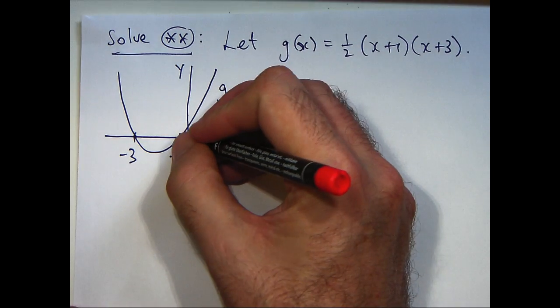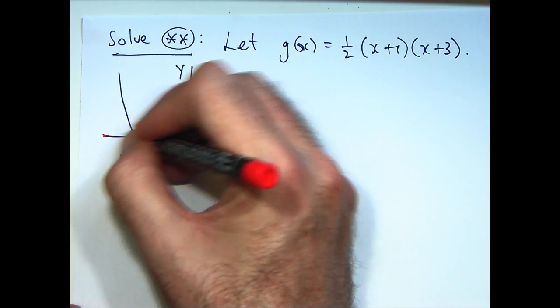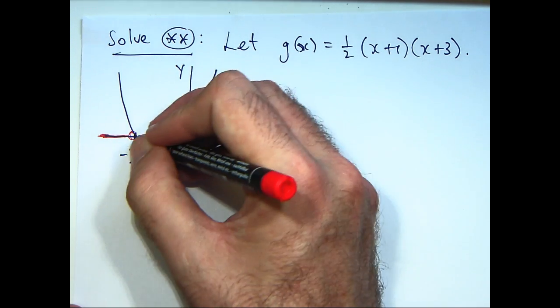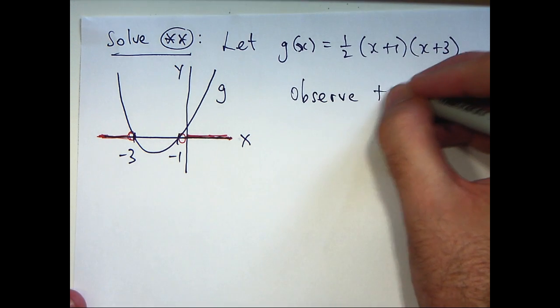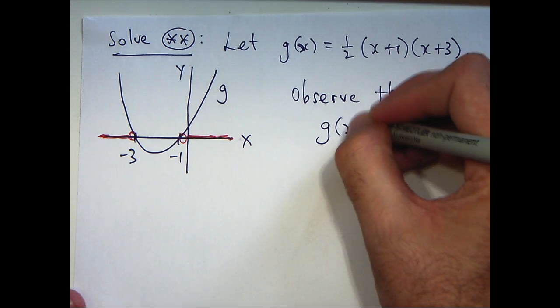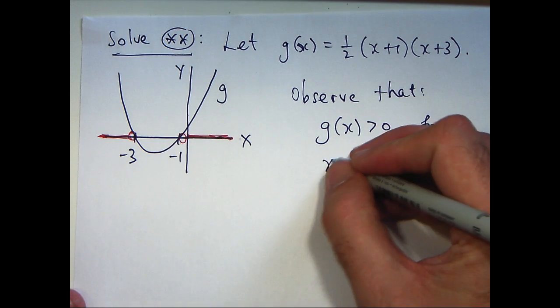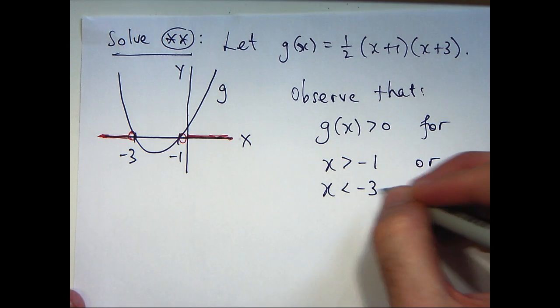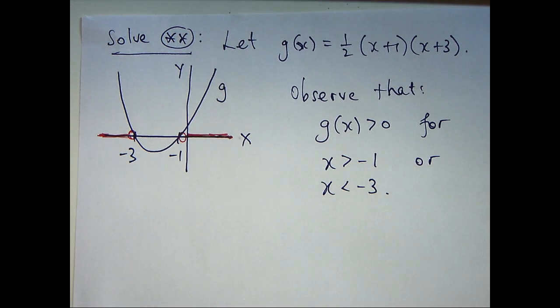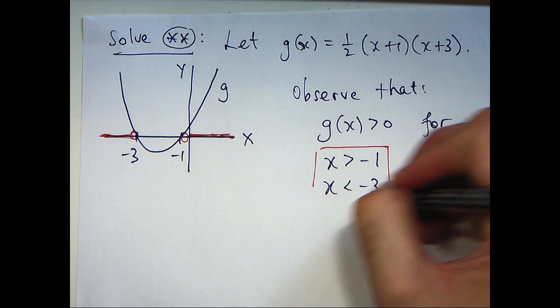Okay, where does the graph lie above the x axis? Well, the corresponding x points you can see it's here and here. The corresponding x points that lie on the x axis are here and here. Okay, so the graph lies above the x axis when x is greater than minus 1 or when x is strictly less than minus 3. So we can now solve our problem. We've solved the simpler problem and we can go back and these will be solutions to our original star inequality.